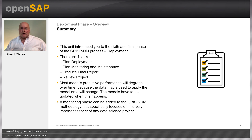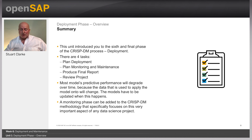This is a short summary. There are four tasks you should consider in the deployment phase: plan deployment, plan monitoring and maintenance, produce the final report, and review the project. You may need to add an extra phase to the CRISP process so that the performance of the models can be monitored as they degrade. That's it for unit one of week six. In the next unit, we're going to take a look at the deployment options.